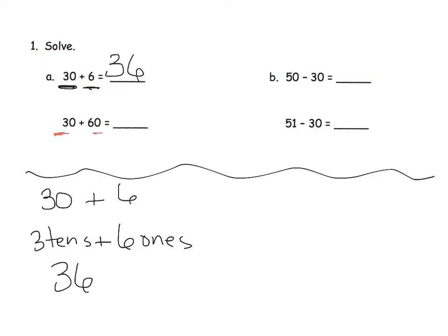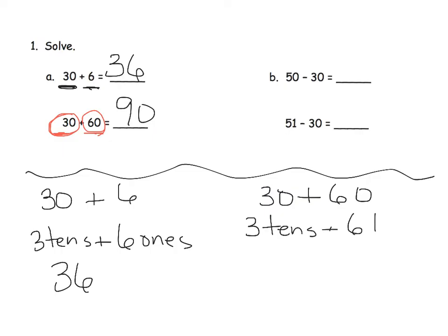Let's go to thirty plus sixty. That means we have three tens plus six tens, and three tens plus six tens equals nine tens, which is ninety. Another way to write it: thirty plus sixty — students can think of this as three tens plus six tens, which equals nine tens, which is equal to ninety.